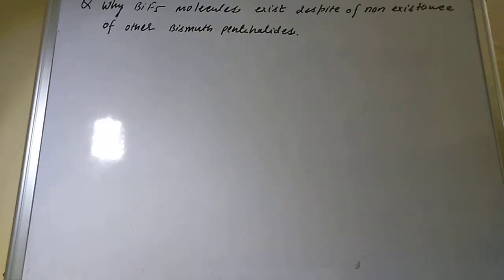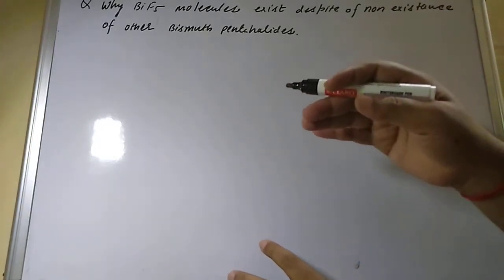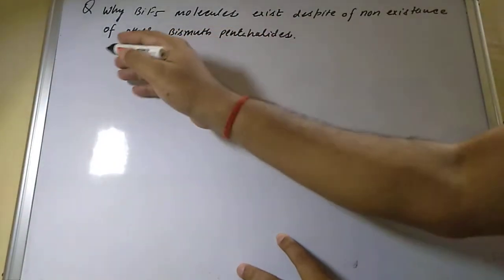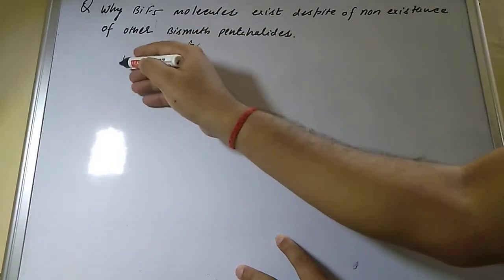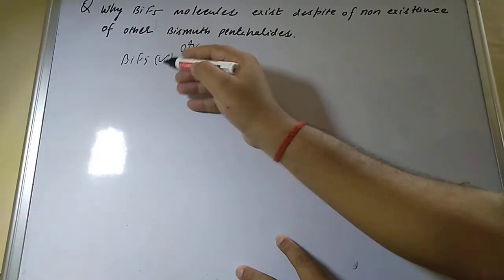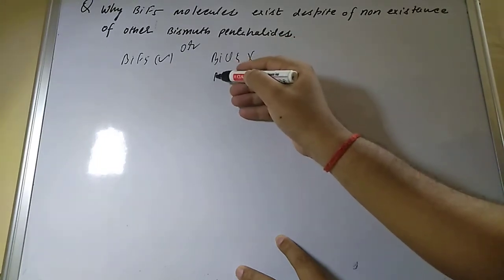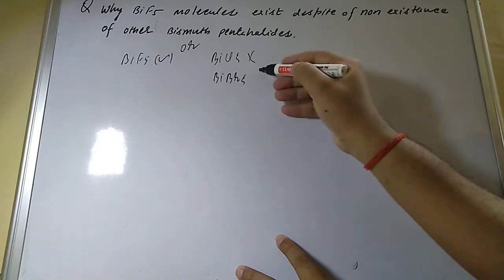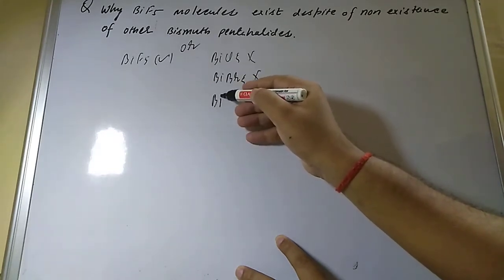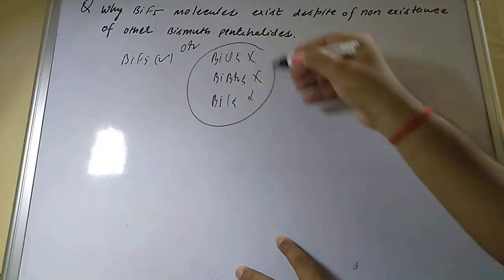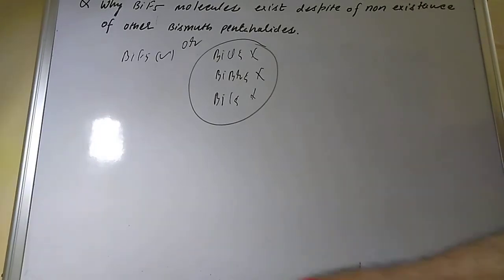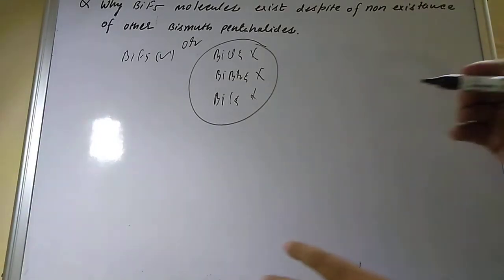Hello, good evening friends. Today I'm going to explain a problem — one of my students asked this question: why does the BiF₅ molecule exist despite the non-existence of other bismuth pentahalides? BiF₅ is possible, but BiCl₅ is not possible, BiBr₅ is also not possible, and BiI₅ is also not possible. So the question is: how is BiF₅ possible?